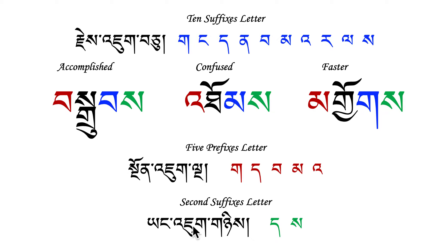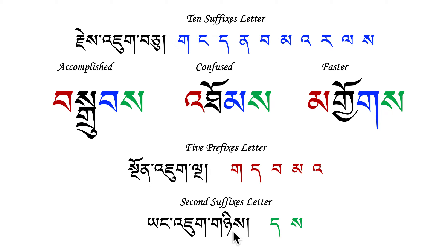And Yangjook — I found the word for it in English: it is 'second suffix.' We have a suffix, right, but this one is called the second suffix. There are only two letters: ta and sa. So Yangjook has only two letters — ta and sa.